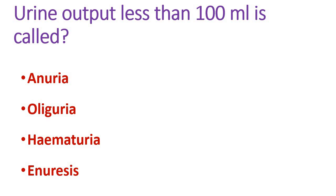Next question: urine output less than 100 ml is called — options are anuria, oliguria, hematuria, and enuresis. Urine output less than 100 ml is called anuria. If it is less than 400 ml, it is known as oliguria. Hematuria means the presence of blood in the urine. Enuresis means bed-wetting, commonly seen among the pediatric population.